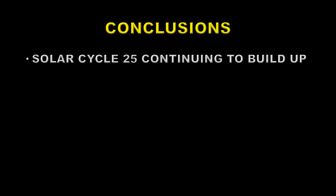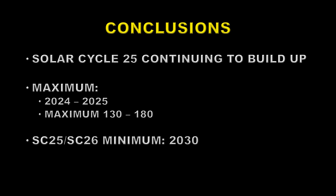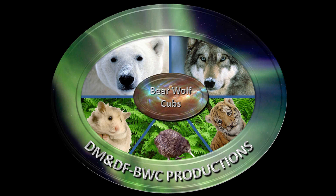So what conclusions can we draw from all of this? Well, the solar cycle is continuing to build up. The maximum will be sometime in 2024, or possibly even 2025, with a maximum anywhere between 130 and 180. The solar minimum between Solar Cycle 25 and Solar Cycle 26 will be either late 2029 or early 2030 according to my calculations. Thank you for watching — don't forget that I have a YouTube channel that does daily updates on what's going on with the sun. Until next time, stay safe and goodbye.